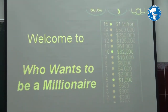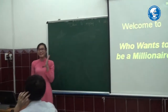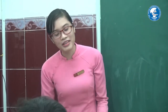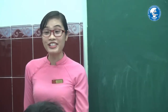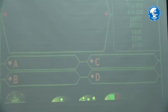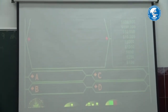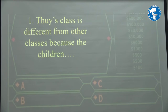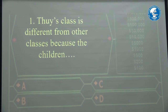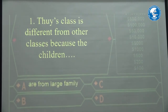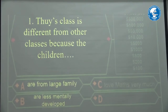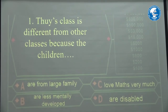Who wants to become a millionaire in our class? But before you become a billionaire, you have to become a millionaire first. I will give the questions, and if you know the answer please raise your hand. Question one: this class is different from other classes because the children are disabled.